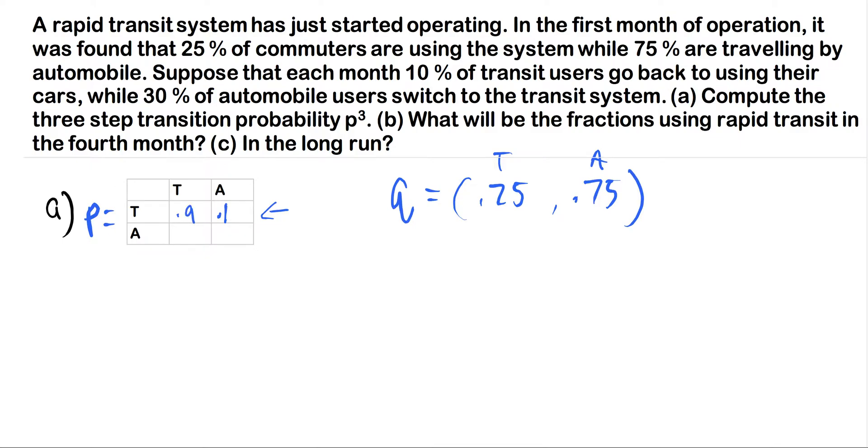Now moving on, while 30% of automobile users switch to the transit system. So if we're here using our automobile, 30% start using the transit system. That leaves, of course, 70% to continue using their automobile if they're already doing so. So like I said, all the information has been given to us. And this is going to be our transition matrix P, given the information.